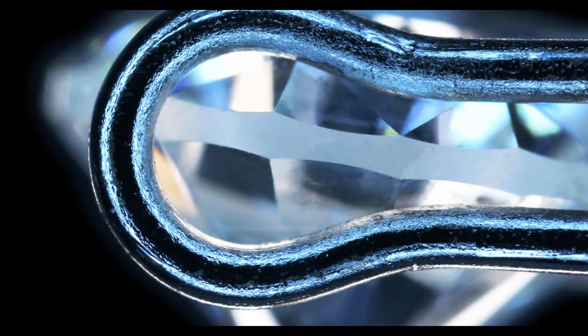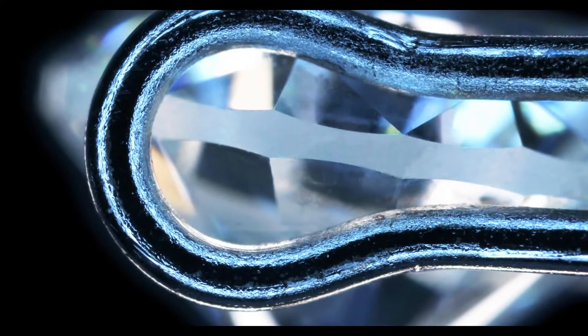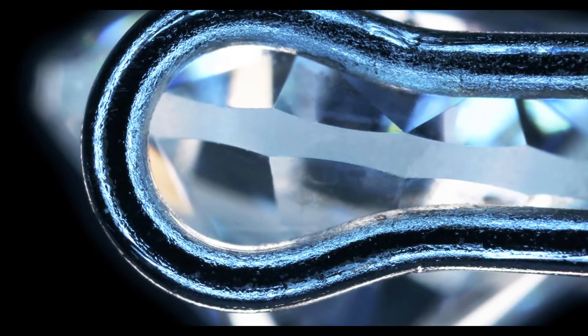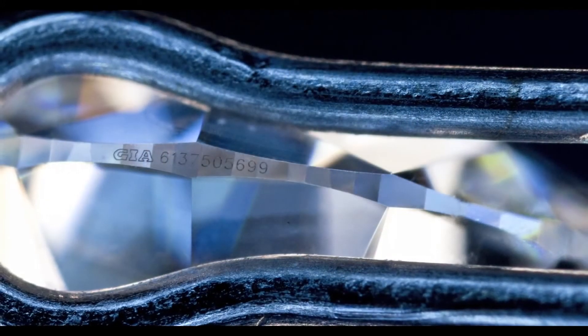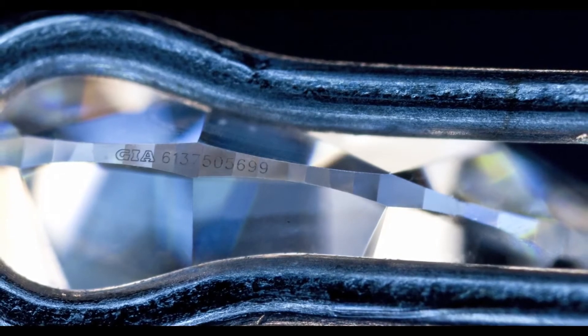This process leaves a matte-like finish on the girdle of the diamond. The girdle can be left in this form, which is called a bruted girdle, or a series of small facets can be polished onto the girdle, giving a faceted girdle.